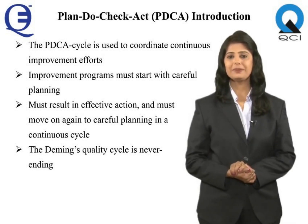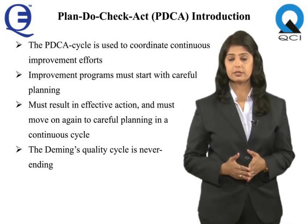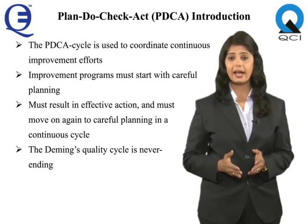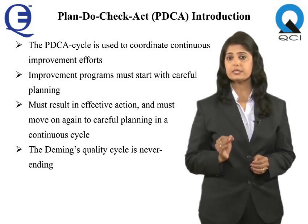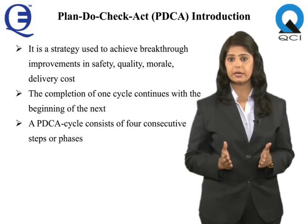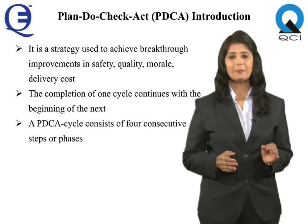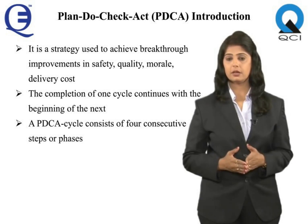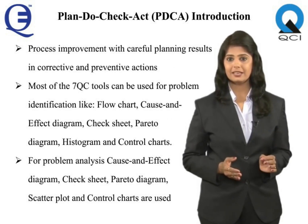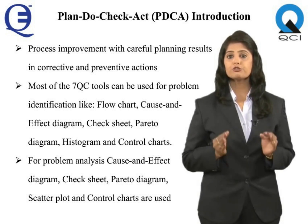Plan, Do, Check, Act — PDCA. The PDCA cycle is used to coordinate continuous improvement efforts. It emphasizes that improvement programs must start with careful planning, must result in effective action, and must move on again to careful planning in a continuous cycle. The Deming quality cycle is never ending. It is a strategy used to achieve breakthrough improvements in safety, quality, morale, delivery, cost, and other critical business objectives. A PDCA cycle consists of four consecutive steps or phases. When process improvement starts with careful planning, it results in corrective and preventive actions supported by appropriate quality assurance tools, which lead to true process improvement.